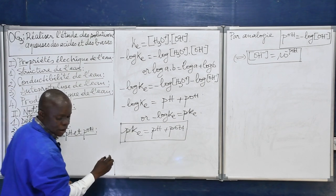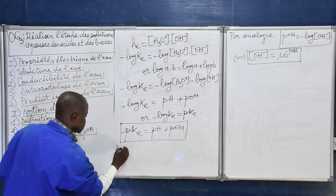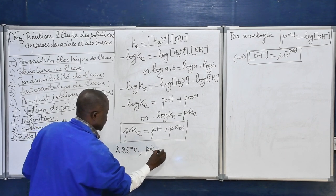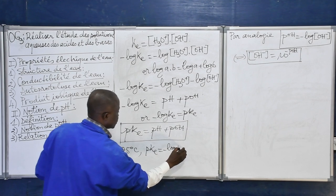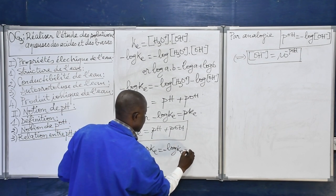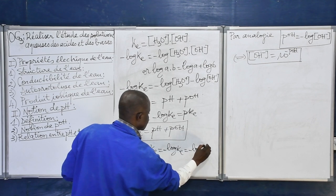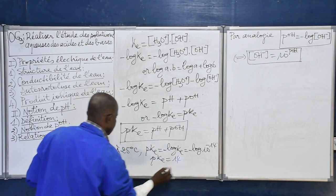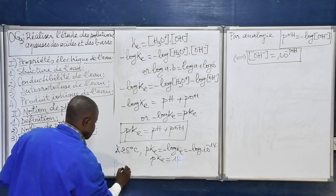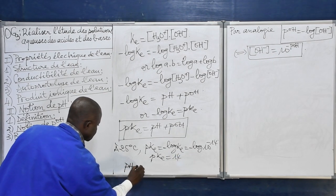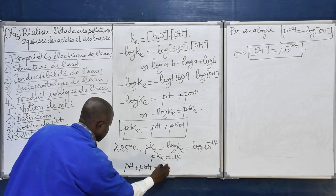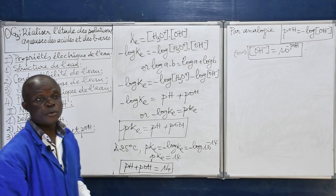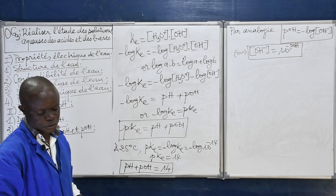À 25°C, pKe = −log(10⁻¹⁴) = 14. Donc, à 25°C, pH + POH = 14. Voilà la relation qui lie le pH et le POH.